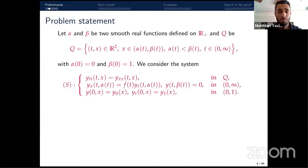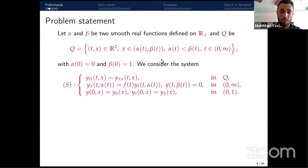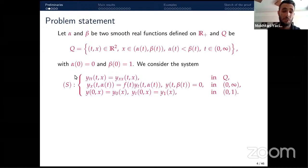The aim of this talk is to study the asymptotic behavior of the solution of system S in domain Q, with its boundary conditions and initial states. Here Q is an open subset of ℝ², representing time and space, where time is positive and x lies between two boundary functions α and β, with α less than β. I assume at t=0 that α(0)=0 and β(0)=1.